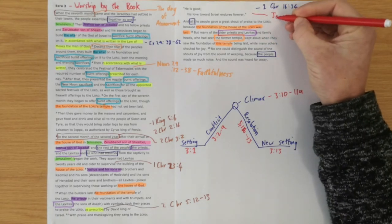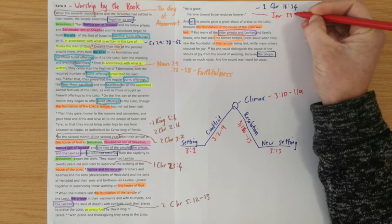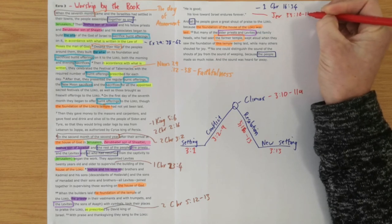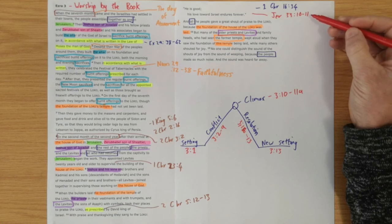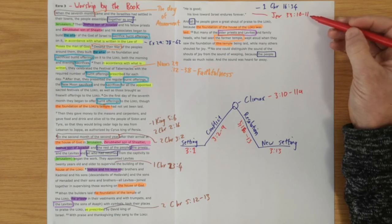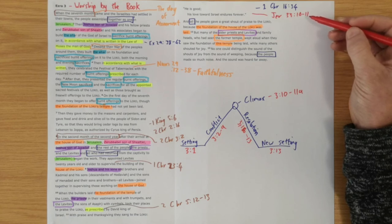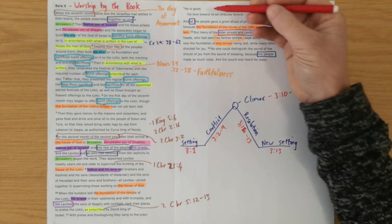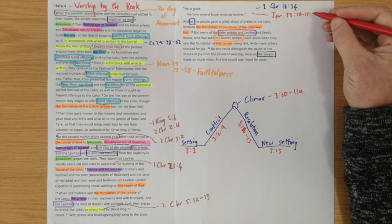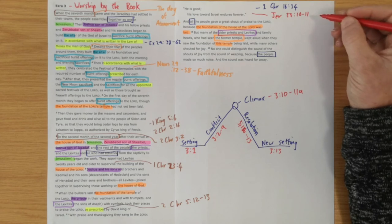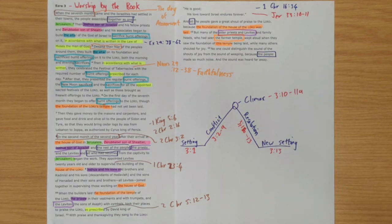If you go and read Jeremiah 33 verse 10 to 11, we'll see that Jeremiah said many years before this happened, right at the beginning of the exile, Jeremiah prophesied that God would bring his people back and the sounds of joy would be heard again. And they would be singing he is good his love endures forever. So God is keeping his word as he promised to do. But now we do need to work out what's happening with this...